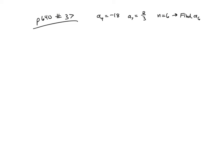Okay, this is page 640, number 37. You're given that a sub 4 is negative 18, a sub 7 is two-thirds, and you are supposed to find a sub 6.